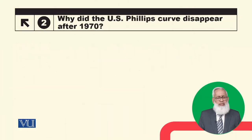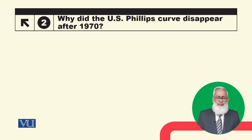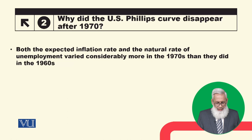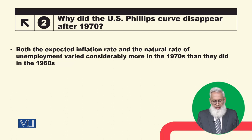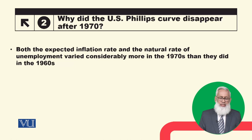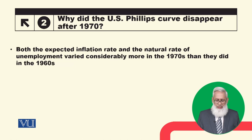Why did the US Phillips Curve disappear after the 1970s? Both the expected inflation rate and the natural rate of unemployment varied considerably more in the 1970s than they did in the 1960s. Expected inflation changed with many variations, and the natural rate of unemployment also changed.